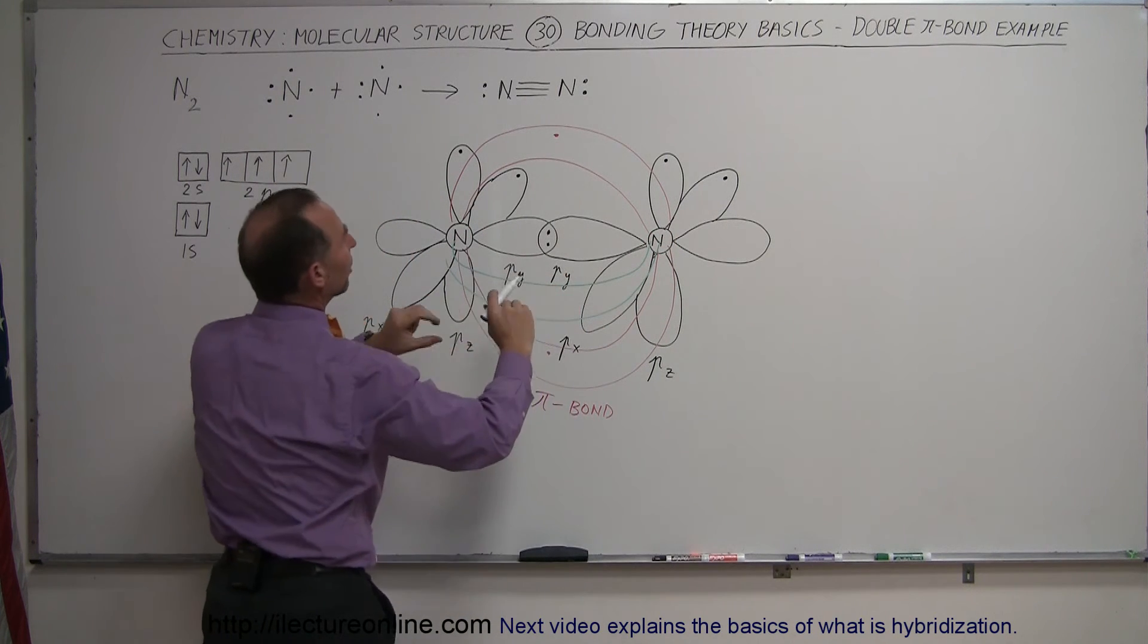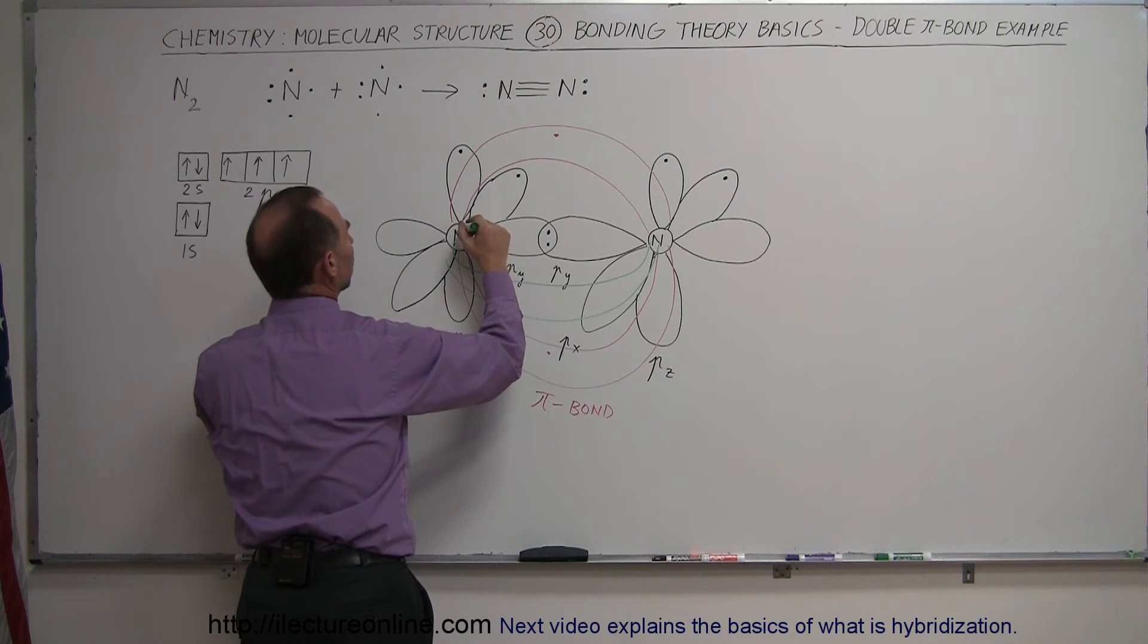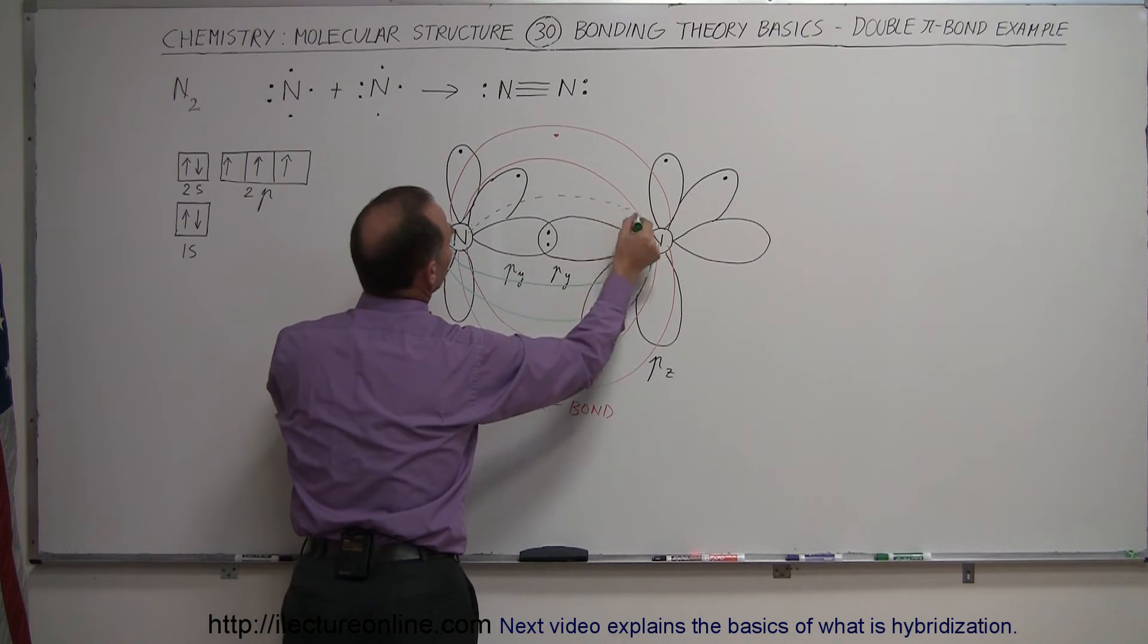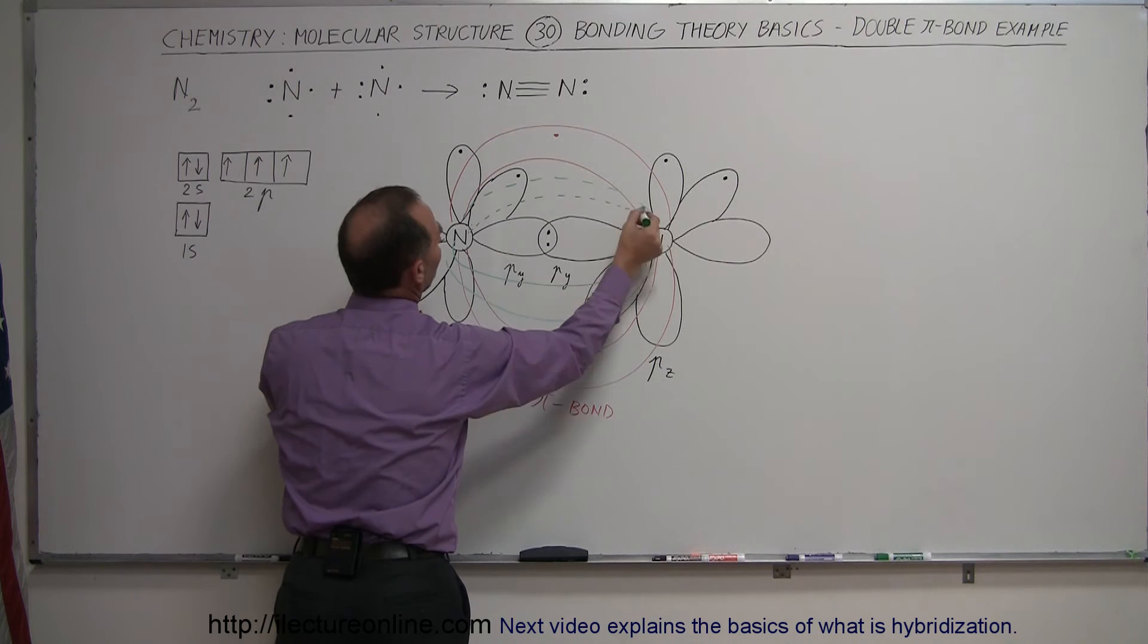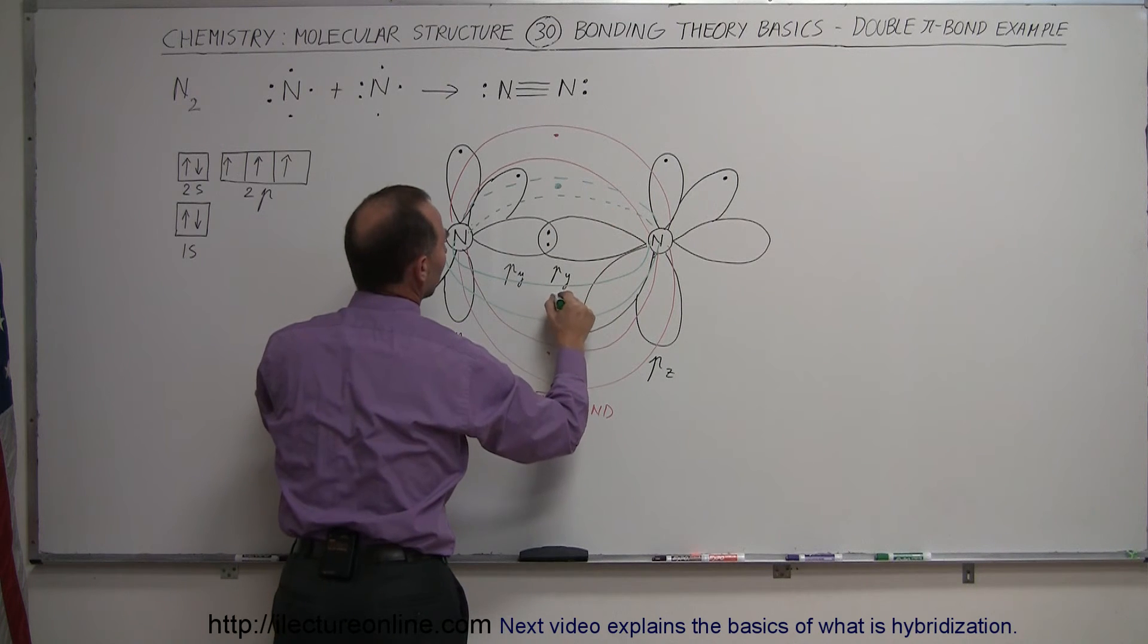This would be the bond coming out of the board, and then we have the x orbital on the other side joining together like this and forming a bond behind the board. So I'll put an electron in each.